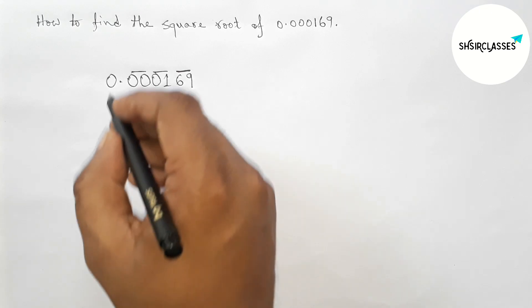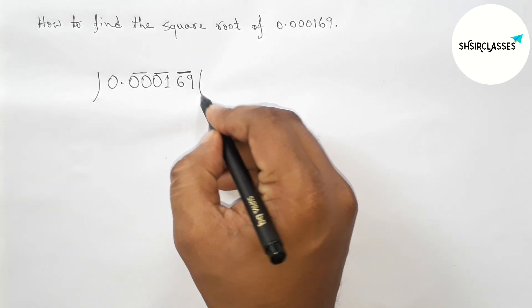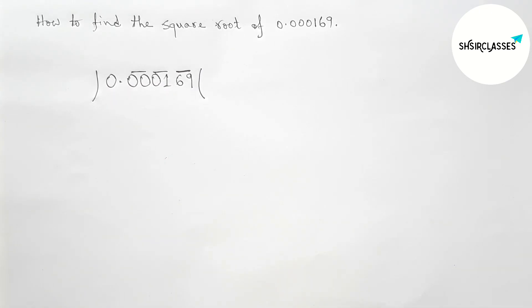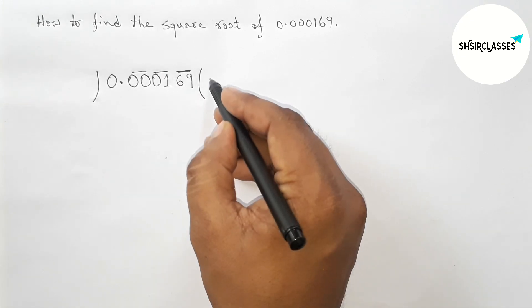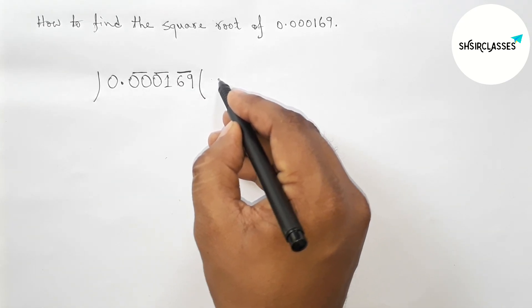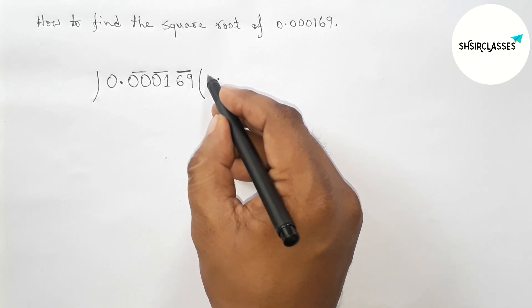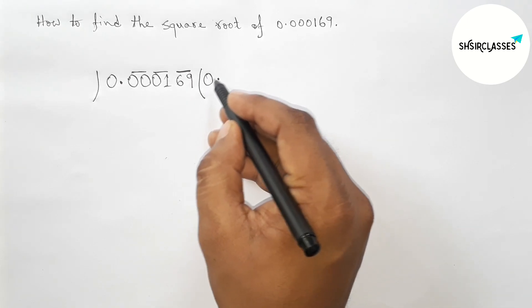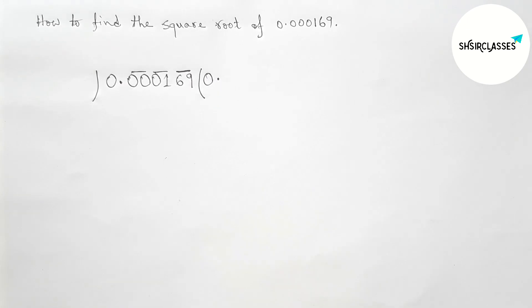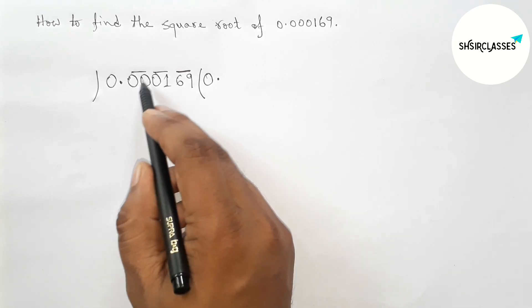Now this point will be shifted here, so taking here a point. And for looking good, taking here 0, so 0 point here. Next, the first pair of 0.